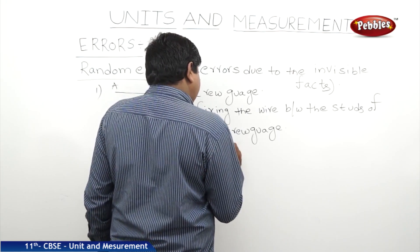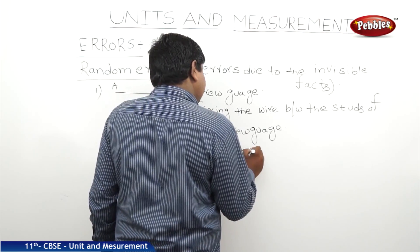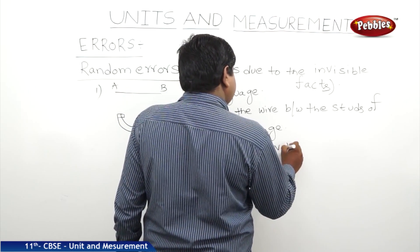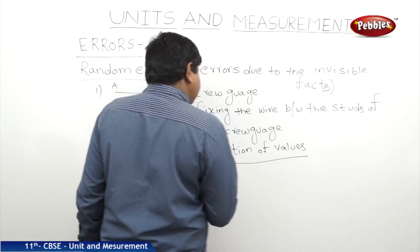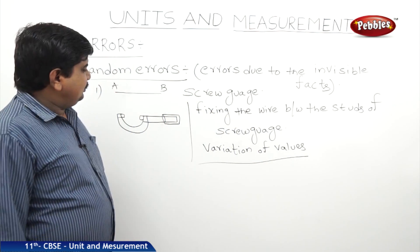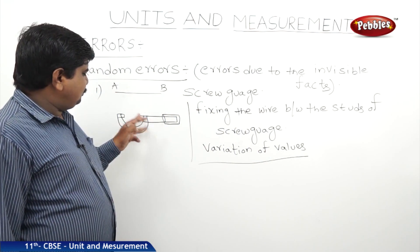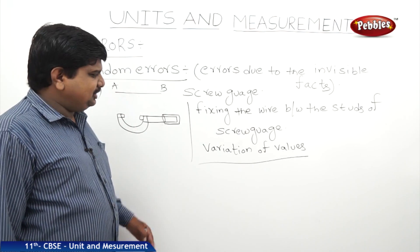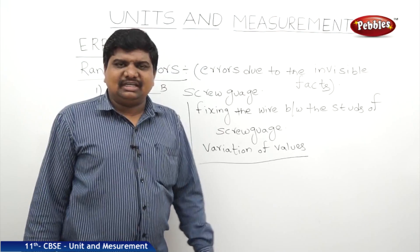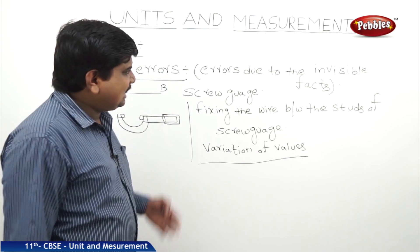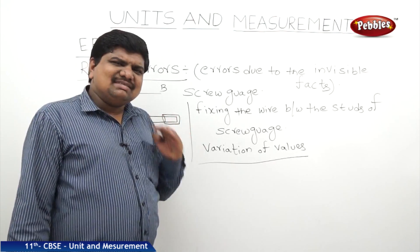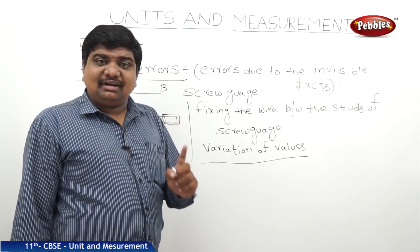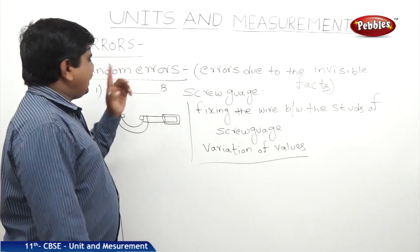The student might think that it is not due to the tightening or loosening the object between the studs, but due to some other factors. He doesn't know what it is. So the reasons which are invisible and we are simply neglecting, but which affect the result, is called a random error.